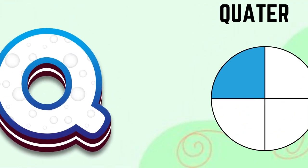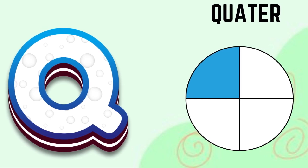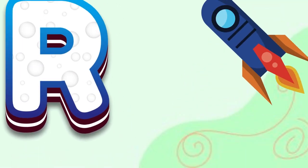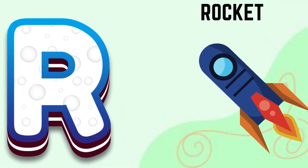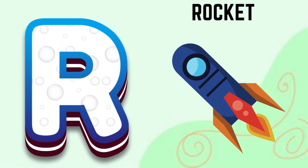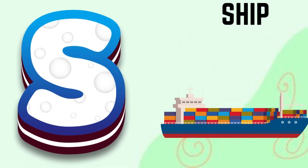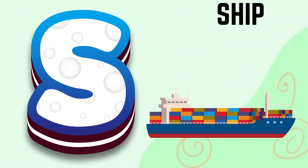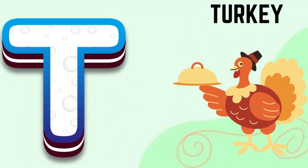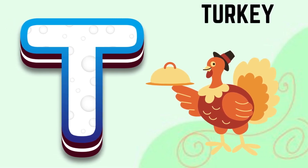Q for quarter, R for rocket, S for ship, T for turkey.